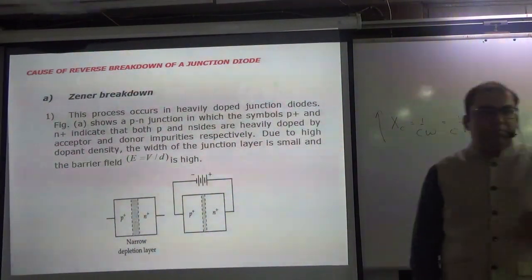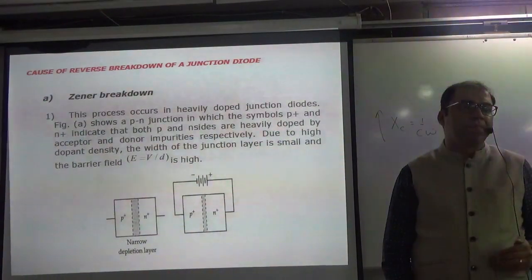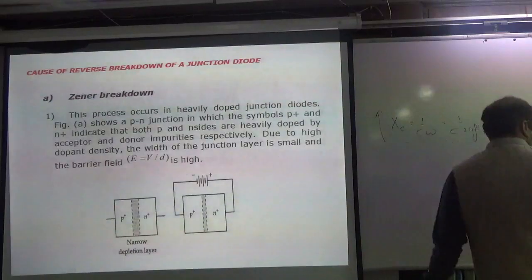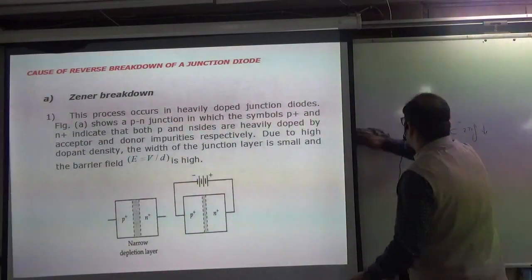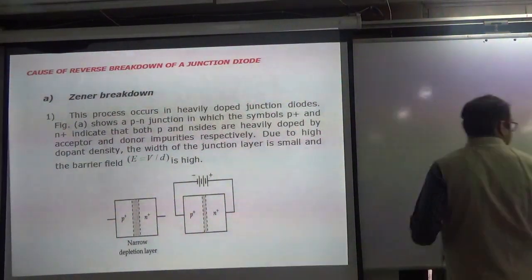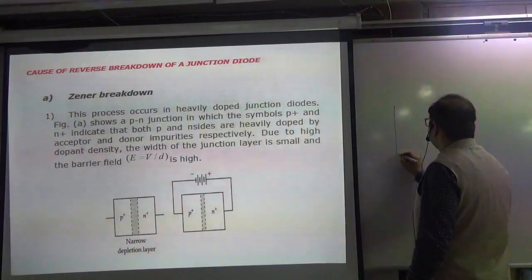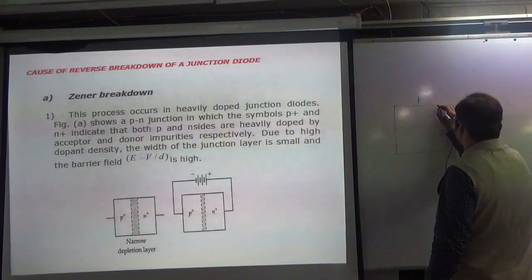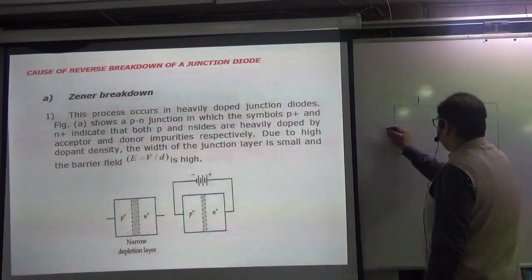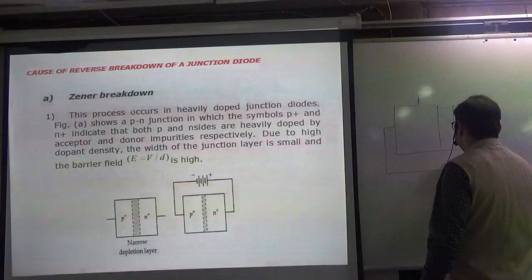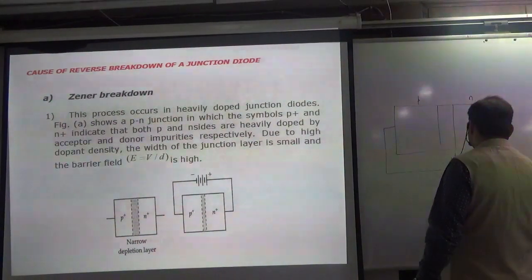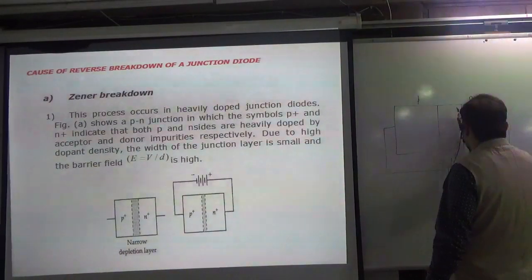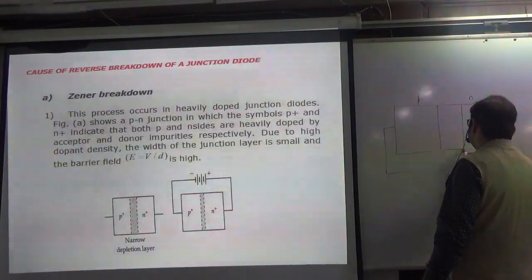What happens if we increase the voltage from the back? I will explain it in a diagram. Suppose you have a P-type and this is N-type. This is in reverse biasing — that is, P side is negative and N side is positive. What happens in the depletion layer? It becomes thick. The depletion layer is thick.